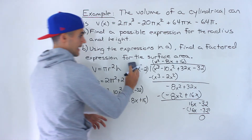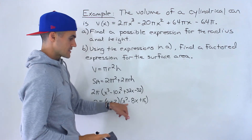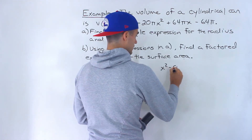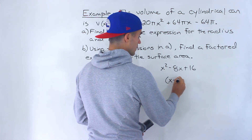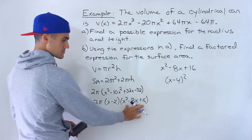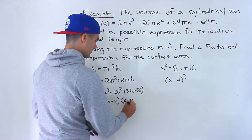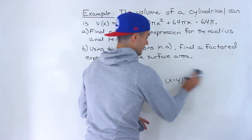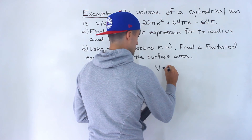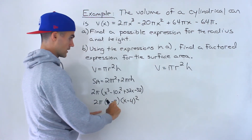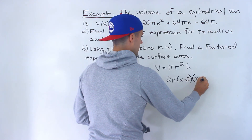We're left with the quadratic x² - 8x + 16, which is a perfect square trinomial. It factors into (x - 4)(x - 4) = (x - 4)². So the volume is fully factored as v = 2π(x - 2)(x - 4)².